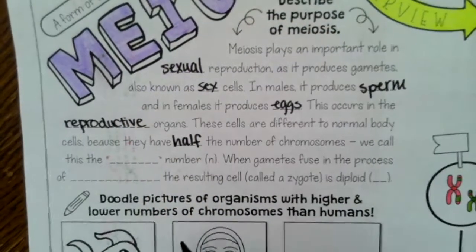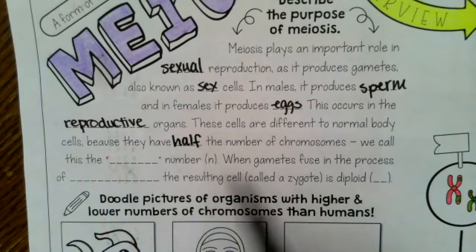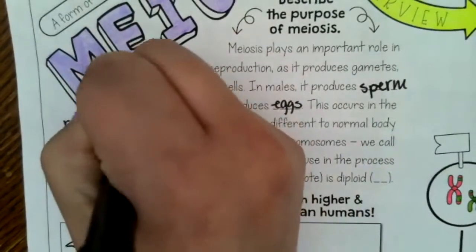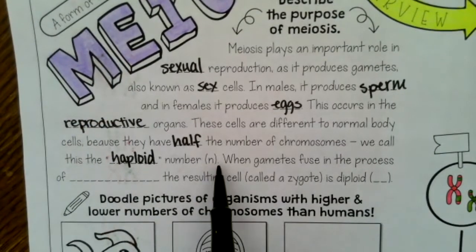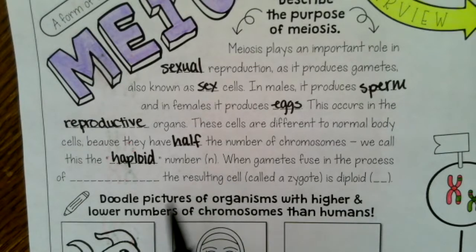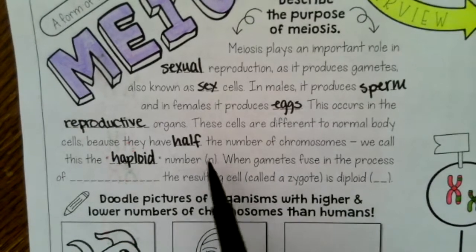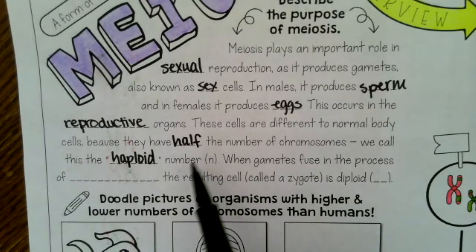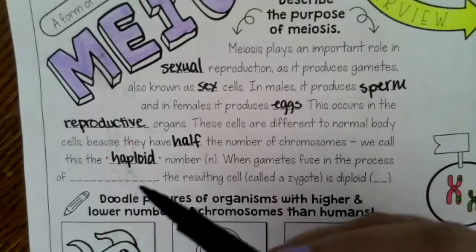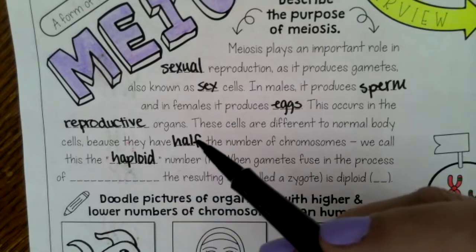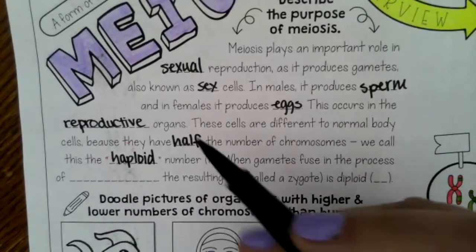These cells are going to be different from normal body cells because they are going to have half the number of chromosomes. When we're referring to half the number of chromosomes, we call this the haploid number — that's with a P. It is going to be referred to with an n. Technically there's an imaginary one in front, so this is 1n. Haploid means half.